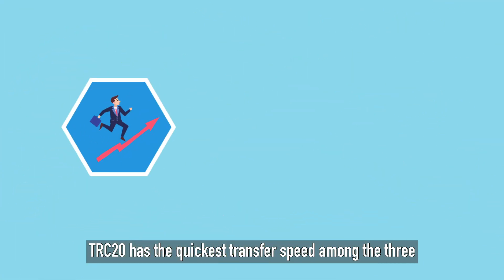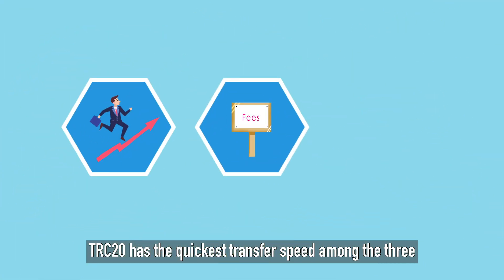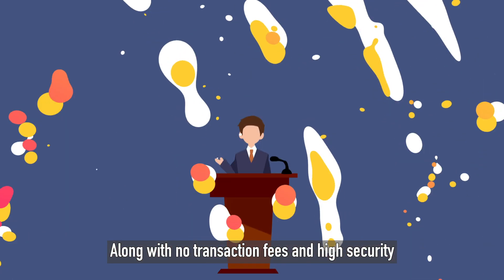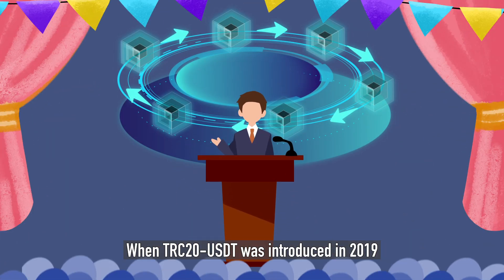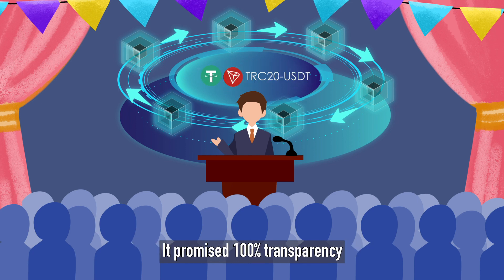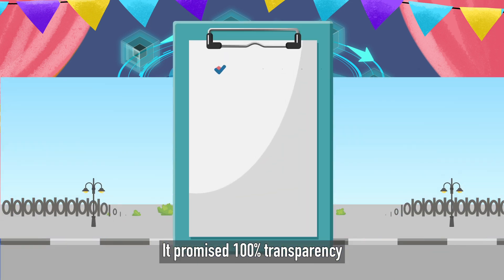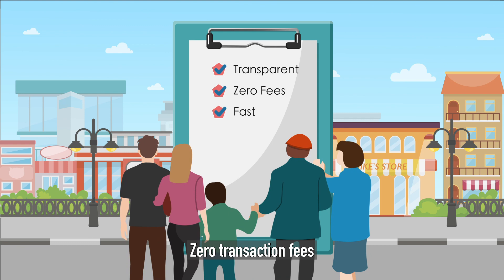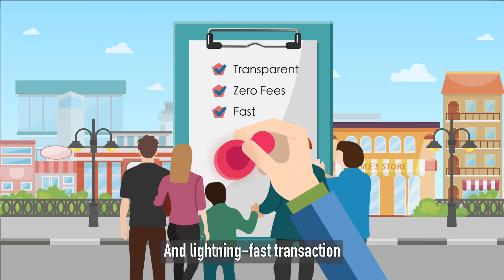TRC-20 has the quickest transfer speed among the three, along with no transaction fees and high security. When TRC-20 USDT was introduced in 2019, it promised 100% transparency, zero transaction fees, and lightning-fast transactions.